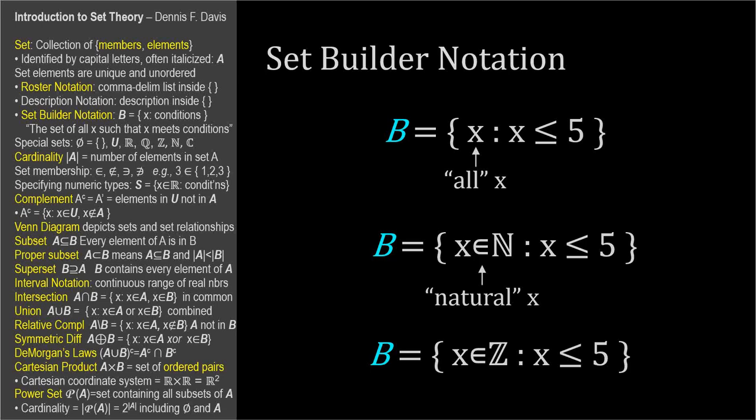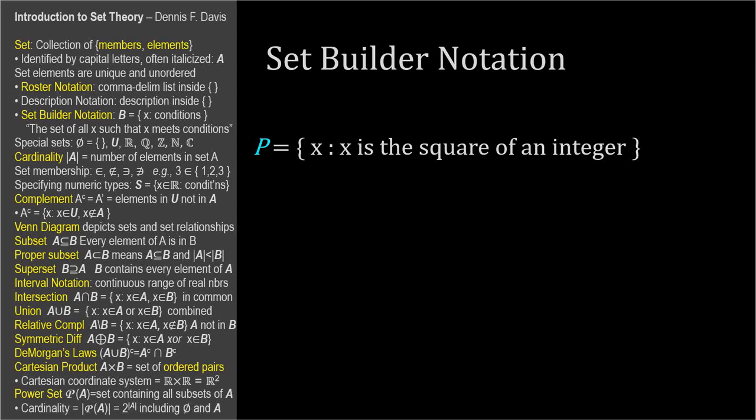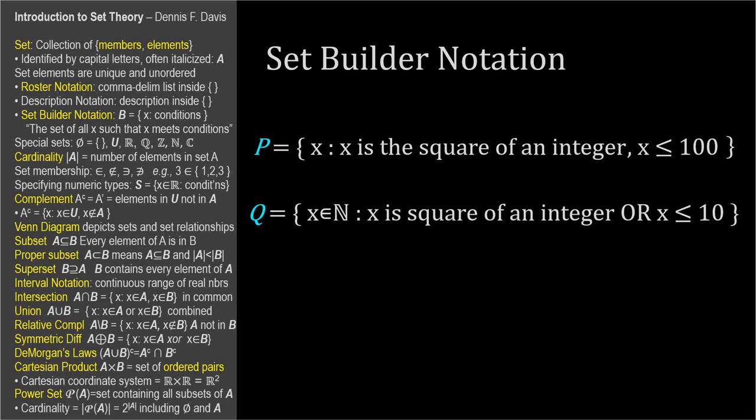We can combine description definitions with set builder notation. P is the set of all X such that X is the square of an integer. Set builder notation is compatible with natural language specification, and we can still combine multiple conditions with a comma to specify that P only includes squares up to 100. We can also separate conditions with OR if either one can be satisfied for the element to be in the set. Q is the set of integer X such that X is the square of a positive integer or X is less than or equal to 10. We'll talk more about AND and OR operators shortly.